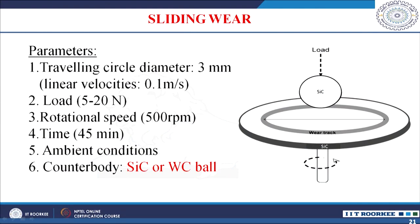The sliding wear test was done using a ball-on-disc sliding wear test apparatus. The ball was 3 mm diameter commercially available, and the disc of investigated silicon carbide ceramics was rotated at 500 rpm for 45 minutes in ambient conditions against both a silicon carbide ball and a tungsten carbide ball—both commercially available.